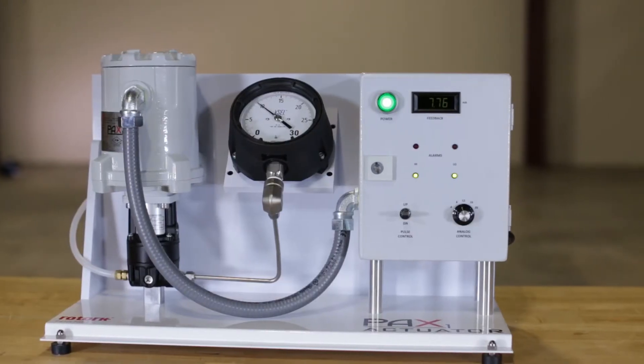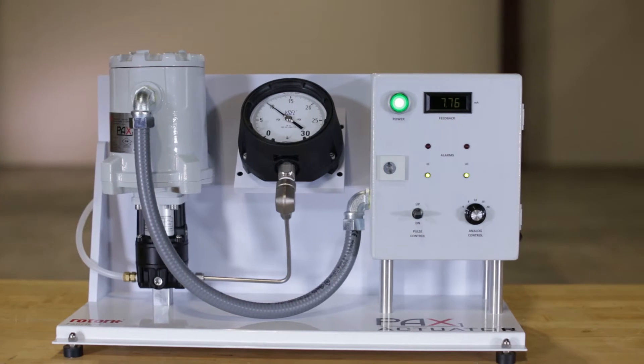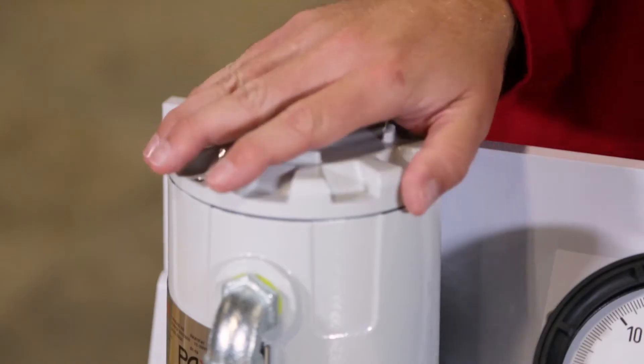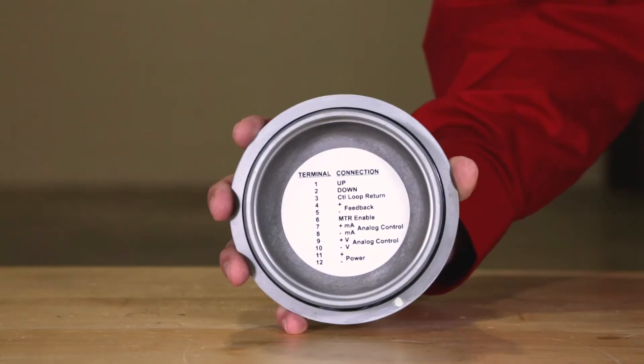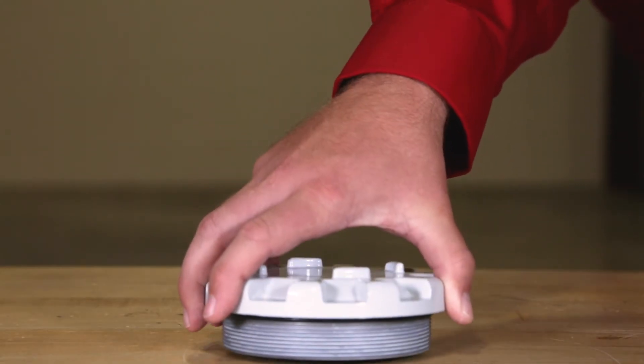The PAX 1 requires no external device or software for setup or commission. The controls are accessed by removing its cover. On the underside of the cover is the wiring diagram for the PAX 1.